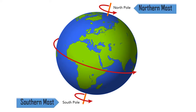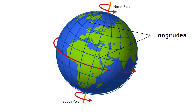The North Pole is the northernmost and South Pole is the southernmost point of the earth. These are the two only points where the earth's axis meets its surface. All lines of longitude meet at both the North and South Pole, coming closer and closer to each other as they approach the poles where they all meet.